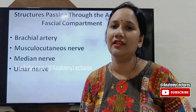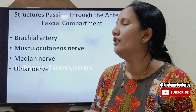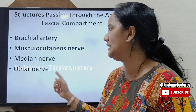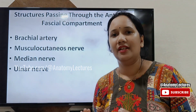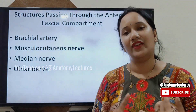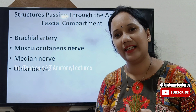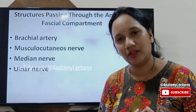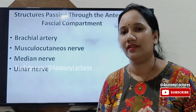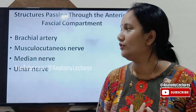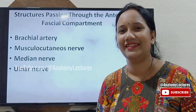Other structures in relation to the anterior compartment that pass through it include the brachial artery, the musculocutaneous nerve, the median nerve, and the ulnar nerve. To summarize: the anterior compartment, also called the flexor compartment, has three muscles — biceps brachii, coracobrachialis, and brachialis — supplied by the musculocutaneous nerve, with the brachial artery as the main arterial supply. In the next videos, we will discuss the musculocutaneous nerve and brachial artery in detail. Thank you for watching.